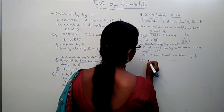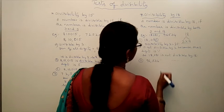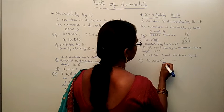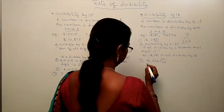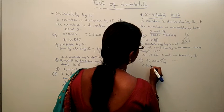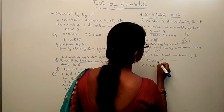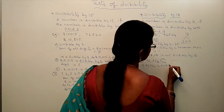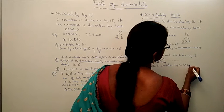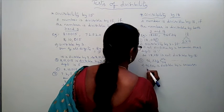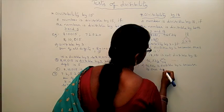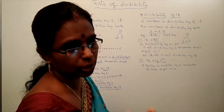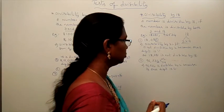Second example: 96,534. We have to check divisibility by 2 and 9. First, check by 2. The ones digit of 96,534 is 4. Since the ones digit is 4, it is divisible by 2. The ones digit must be 0, 2, 4, 6, or 8 — it is 4, so it is divisible by 2. Next, what do we check? Divisibility by 9.